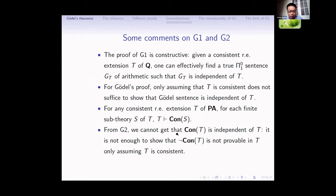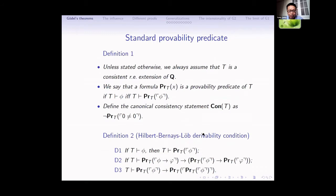Two comments about G2. The consistency of PA is not provable in PA, but for any finite sub-theory S of PA, PA can prove the consistency of S — that means PA can prove the consistency of any finite sub-theory of PA. Finally, for G2, we cannot get that the consistency of T is independent of T. To show that the negation of Con(T) is not provable in T, we need to assume conditions stronger than T is consistent.